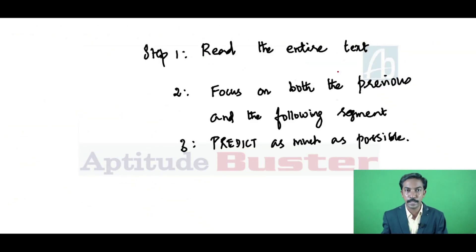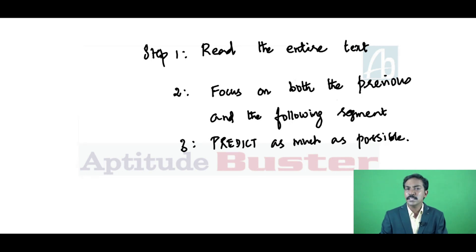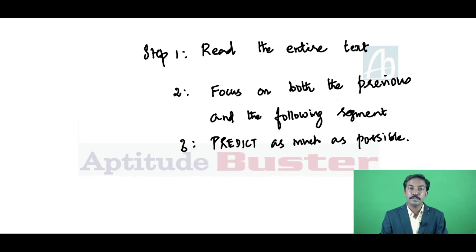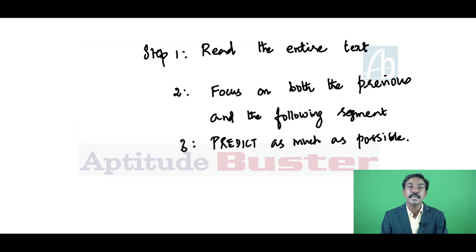Step one is to read the entire text. Though the given cloze passage has many blanks, do read the entire text — that will give you a rough idea about the theme. Step two is to focus on both the previous and the following segments for each blank, which will tell you whether the blank is testing structure or context. Step three is to predict as much as possible. If your reading is of average quality, approximately 25 to 30% of questions can be guessed. Your reading itself will enable you to guess the word for the blank.